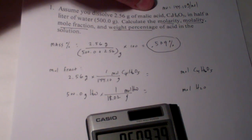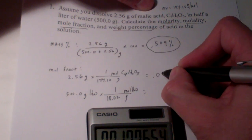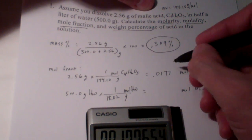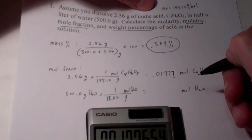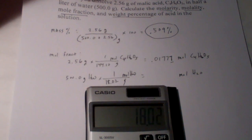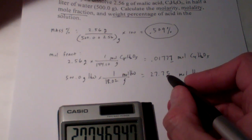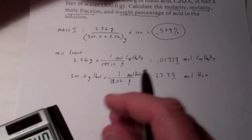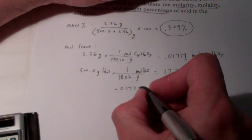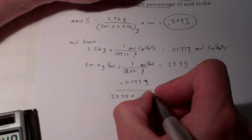Calculating: 2.56 divided by 144.10 gives me 0.01777 moles of C4H6O5 — I'm carrying an extra sig fig and will round at the end. For water: 500 divided by 18.02 gives me 27.75 moles. So the mole fraction of my solute is 0.01777 divided by the sum of 27.75 and 0.01777.